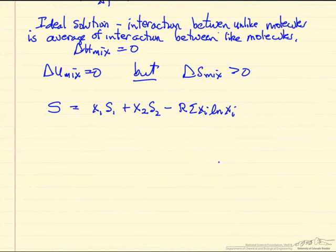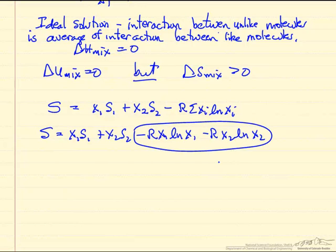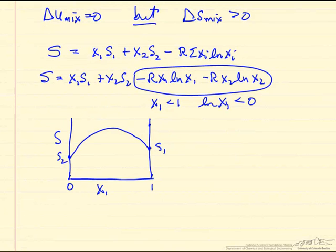So the entropy for the mixture is the sum of the pure component entropies times their mole fraction minus this term for mixing. So if we write out all the terms, minus R x1 ln x1 minus R x2 ln x2. And these are both positive numbers because x1 is less than 1, so therefore the ln of x1 is less than 0. So the entropy increases for a mixture. So here's the behavior we expect. This is the entropy of the mixture. It's a function of mole fraction component 1. It's going to go through a maximum because of this positive term.